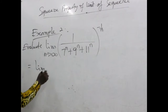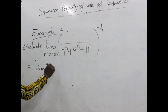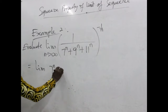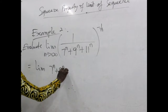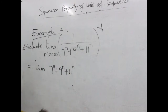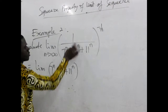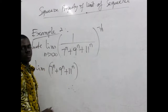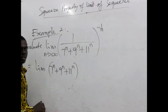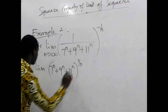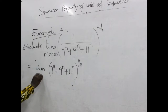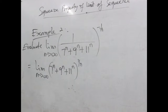So we now have the limit with 7 to the power n, 9 to the power n, and 11 to the power n. As we reciprocate, the negative sign moves, giving us this expression as n approaches infinity. Now it's looking familiar — it looks simpler.